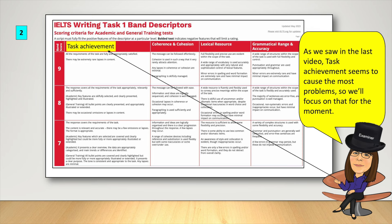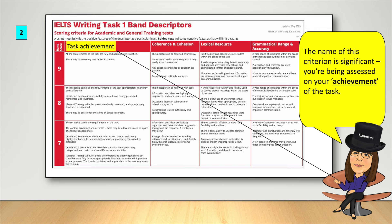As we saw in the last video, Task Achievement seems to cause the most problems, so we'll focus on that for the moment. The name of this criterion is significant. You're being assessed on your achievement of the task.